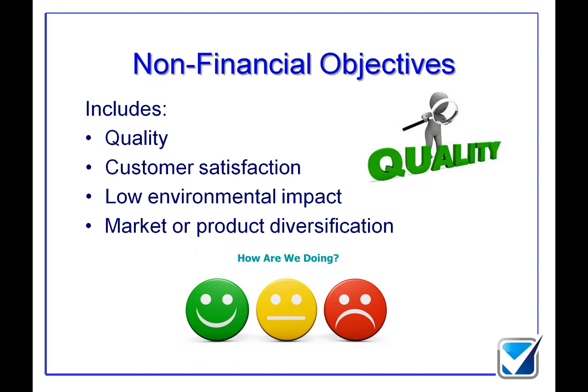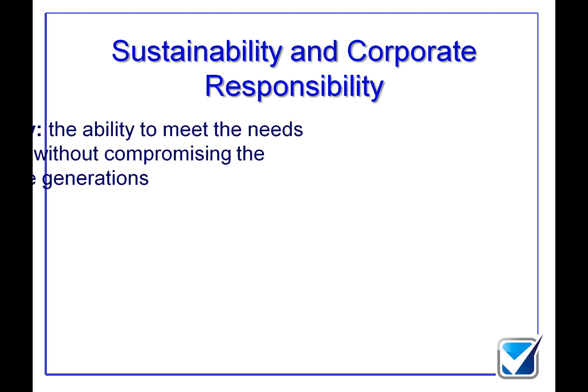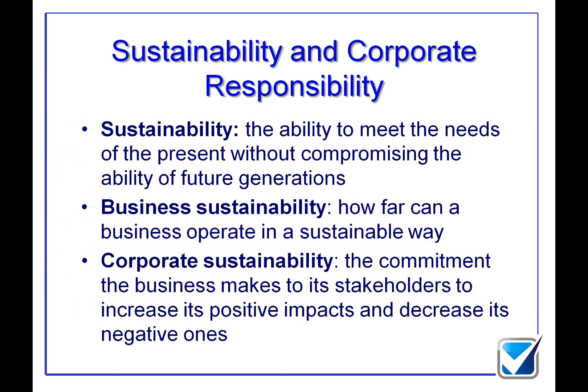Now we're going to talk about sustainability. Before we can get into sustainability in any level of detail, I need to give you some definitions. Sustainability is all about the ability to meet the needs of our present without compromising the ability of future generations. It's all about utilising natural resources - land, trees, and anything else - but not using so much of those natural resources that future generations will not be able to survive. We need to do it in such a way that we maximise the long-term survival of the organisation and the planet.